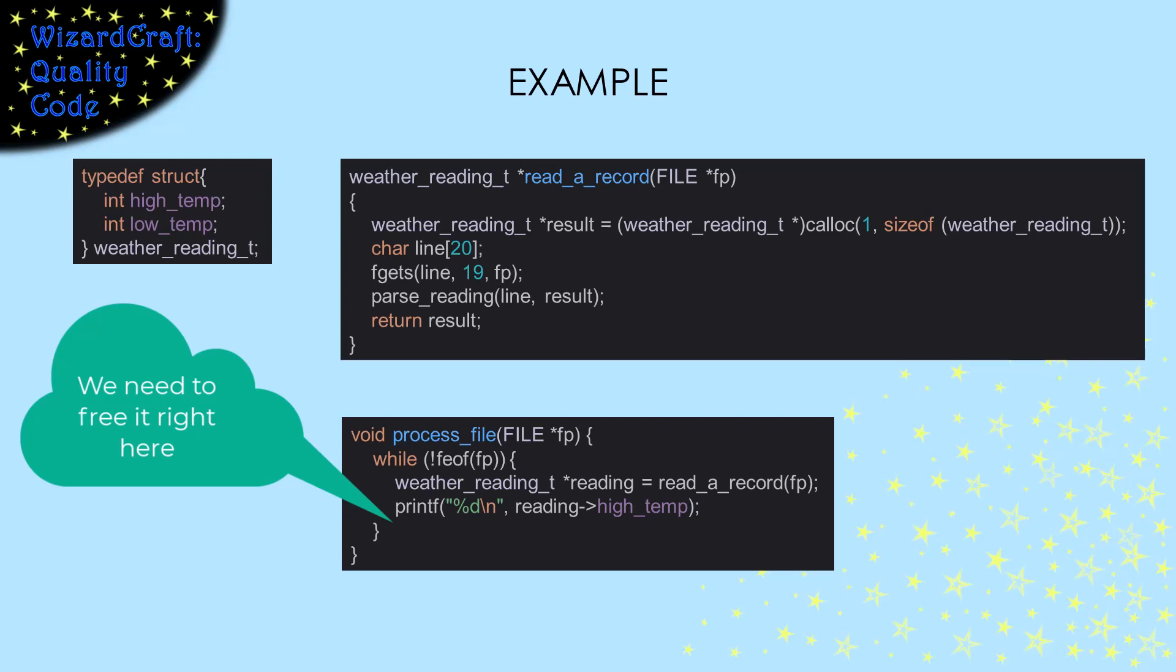The reason that it's hard to spot this memory leak is that the allocate and the place that needs to do the free are far apart.